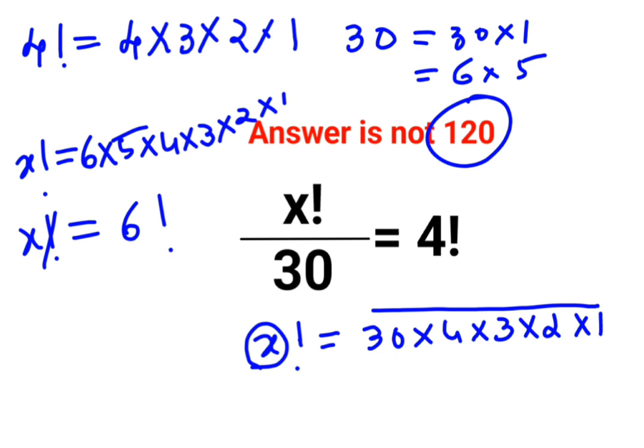It's just x factorial which equals 6 factorial. Then the factorial signs can get cancelled and we can say the value of x is 6.